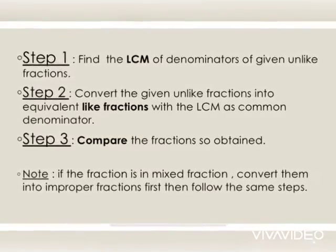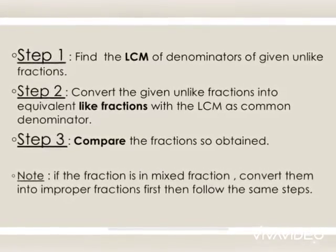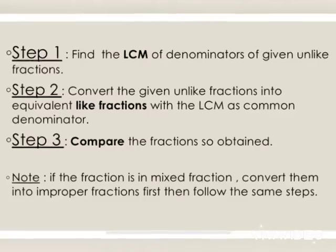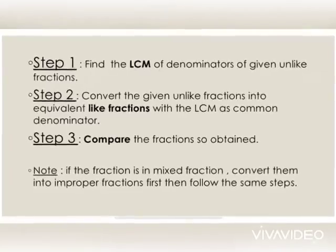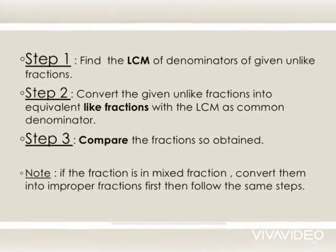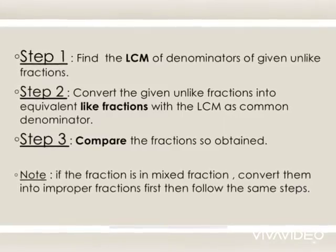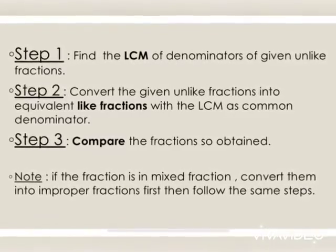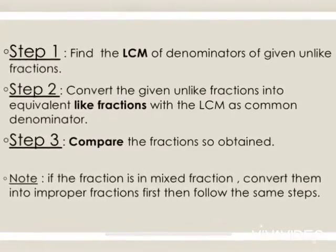Step 1 is to find the LCM of denominators of given unlike fractions. Now the next step will be convert the given unlike fractions into equivalent like fractions with the LCM as a common denominator.